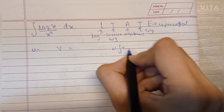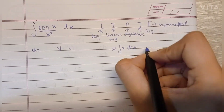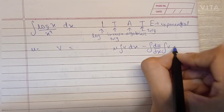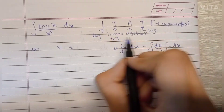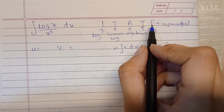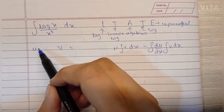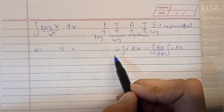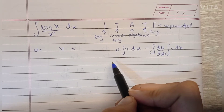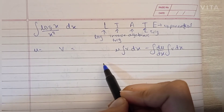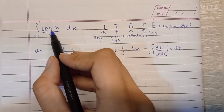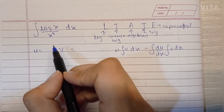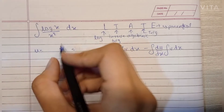u into the integration of v dx, minus the integration of the differentiation of u into the integration of v dx. The LIATE rule helps us decide which term of the integral we should keep as u and which term we should keep as v, based on which term is easier to integrate and which is easier to differentiate. Clearly we can see that log(x) is more difficult to integrate than 1/x².